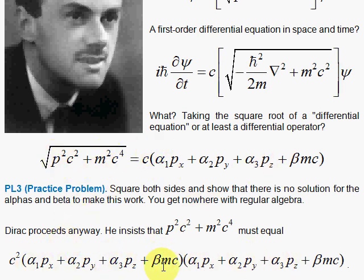So that means alpha 1 times alpha 1, to get the px squared term, has to be 1. Alpha 1 squared has to be 1. Alpha 2 squared has to be 1. Alpha 3 squared has to be 1. You have your individual terms like px squared, py squared, pz squared, beta squared. Then you have all the possible cross terms when you do the algebra.